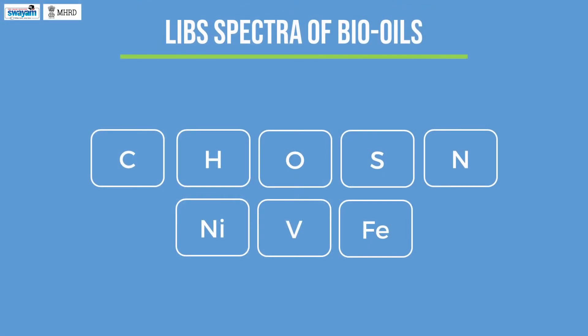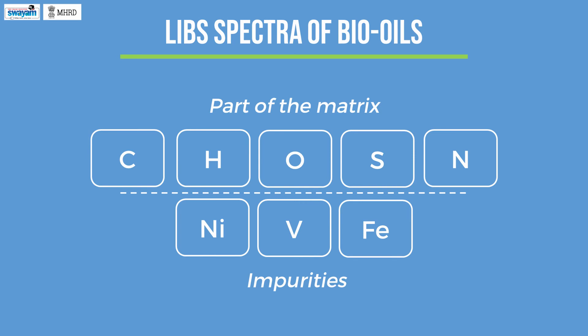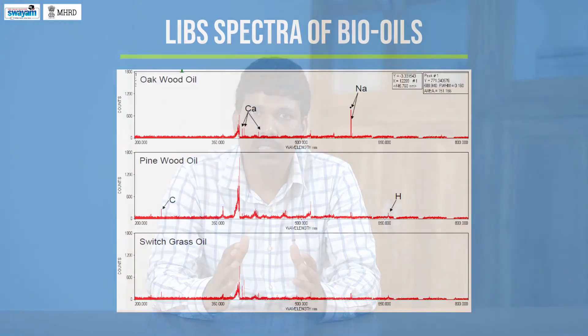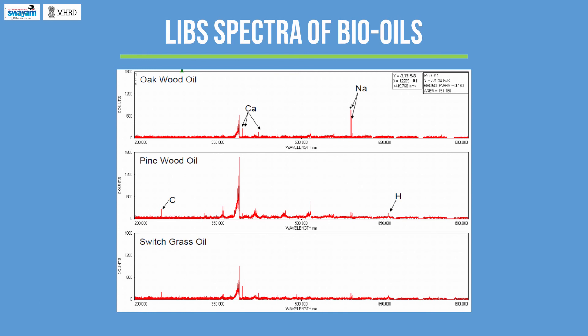LIBS spectra of bio-oils: Elemental analysis of crude oil is performed to determine the presence and content of various elements such as carbon, hydrogen, oxygen, sulfur, nitrogen, nickel, vanadium, and iron. Carbon, hydrogen, oxygen, sulfur, and nitrogen are the integral parts of the matrix, while the others are considered impurities. By measuring the LIBS spectrum, one can conclude the quality of the crude oil. This is a LIBS spectra of oak, pine, and switchgrass oils. By looking at the spectra, we can determine what is present and what is not present in a given bio-oil.